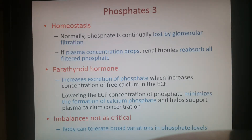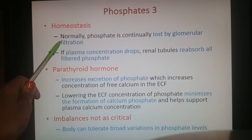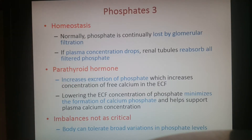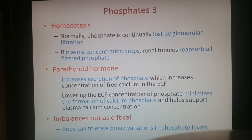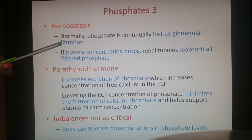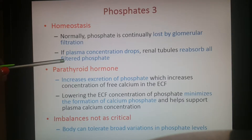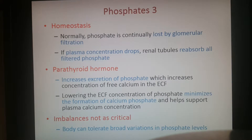Keeping your balance of phosphates in the body — phosphate is usually lost by glomerular filtration. As blood is filtered, it enters the tubules; if your plasma concentration drops, the renal tubules reabsorb all of the filtered phosphate — what would have normally been lost is brought back into the body through the proximal convoluted tubule.